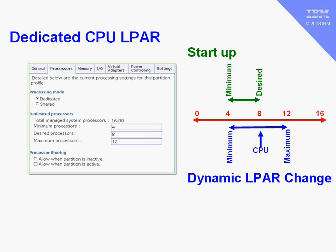That minimum is used as a little bit of a safety net. If you've got a big database, there's no point in starting up with one CPU — you know as soon as users get on, they'll all start complaining about the performance. So you can say we need a minimum of four CPUs to actually get this thing working properly, and we can use the desired minimum for that purpose.